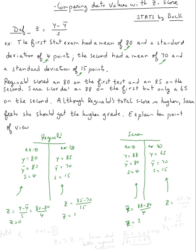For exam two, we'll have y, 65 minus 70 over 15, that's negative 5 over 15, and that's negative 0.33.